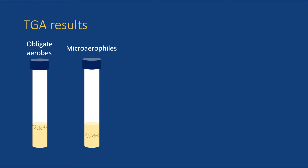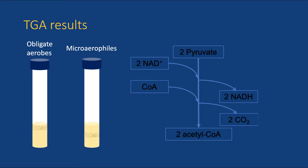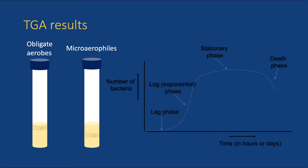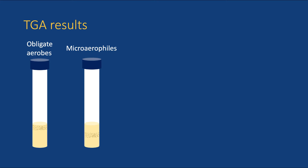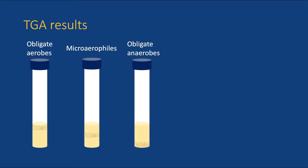Both obligate aerobes and microaerophiles use only aerobic respiration for their energy production. This should bring back happy memories of chapters 3 and 4 on metabolism and microbial growth. Obligate anaerobes cannot use oxygen and are harmed by the presence of oxygen. They can only grow near the bottom of the tube. They can either use fermentation or anaerobic respiration, although only fermentation occurs in TGA.